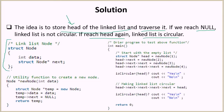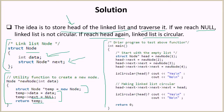Let's start with the structure of the node. You have the data part and a pointer to the next node. Then there is a utility function to create a new node, where you declare a new node, set the data part, set the next pointer to null, and then return the node.